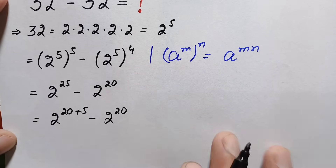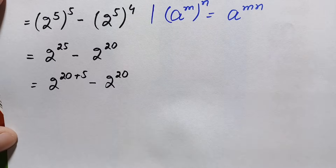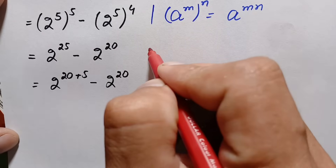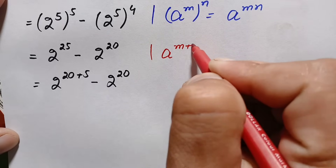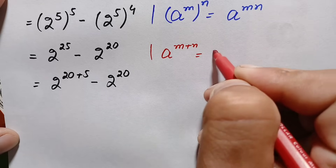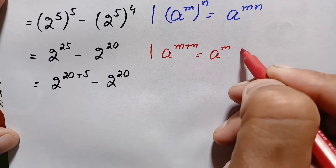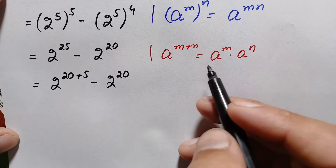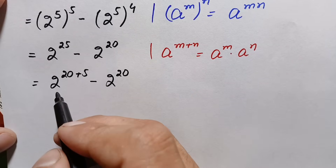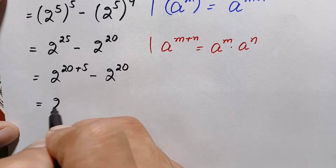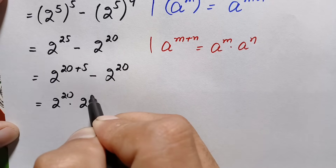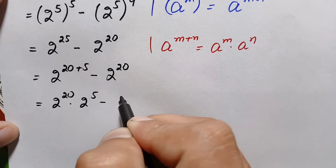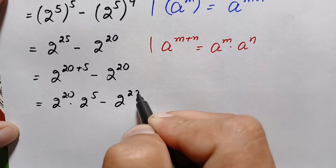For the first term we apply the exponential identity a raised to power (m plus n) equals a raised to power m times a raised to power n. Using this identity, 2 raised to power (20 plus 5) becomes 2 raised to power 20 times 2 raised to power 5, so the expression becomes 2 raised to power 20 times 2 raised to power 5, minus 2 raised to power 20.